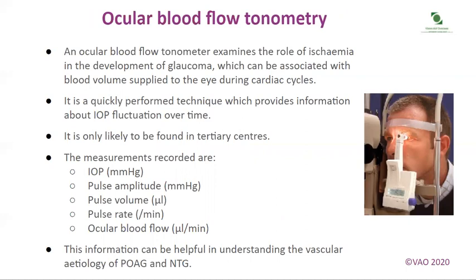Ocular Blood Flow Tonometry: an ocular blood flow tonometer examines the role of ischaemia in the development of glaucoma, which can be associated with blood volume supplied to the eye during cardiac cycles. It is a quickly performed technique providing information about IOP fluctuation over time, and is only likely to be found in tertiary centres. Measurements recorded include IOP, pulse amplitude, pulse volume, pulse rate and ocular blood flow. This information can be helpful in understanding the vascular aetiology of primary open-angle glaucoma and normal tension glaucoma.